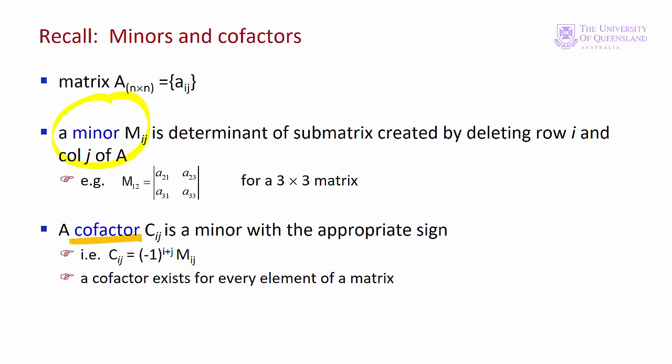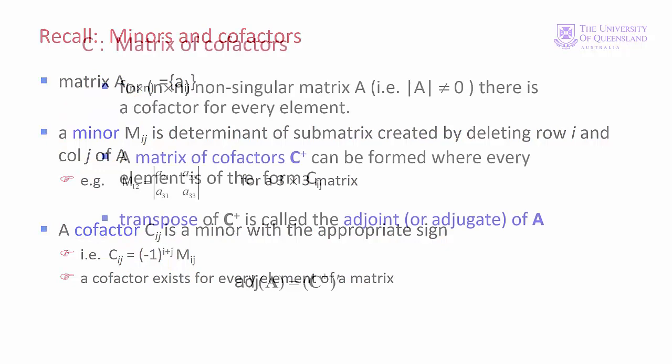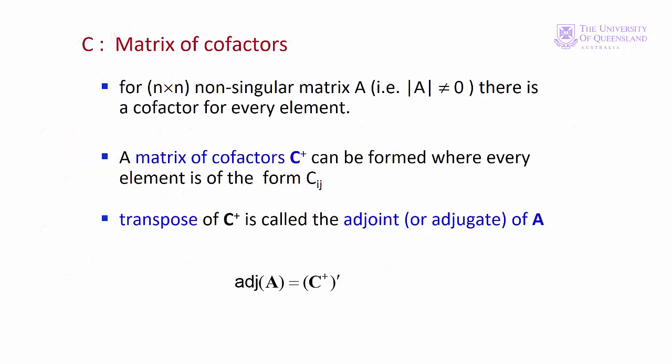The formula for getting the sign is minus 1 to the i plus j, where i and j are the row and the column respectively of the corresponding element. For each element there's a corresponding minor, and for each minor there's a corresponding cofactor. In the adjoint method, we find all the cofactors for a matrix. We then collect all the cofactors in a matrix, naturally called the matrix of cofactors, designated C plus.